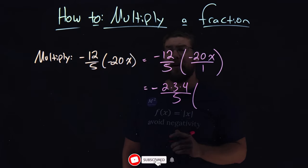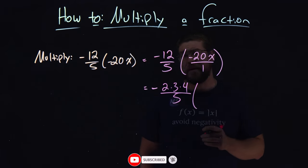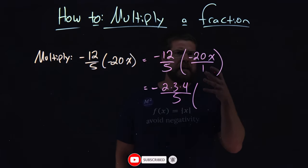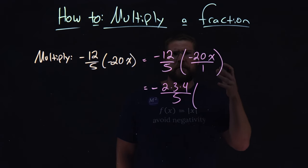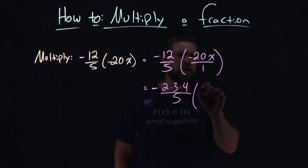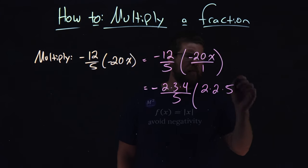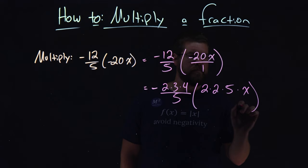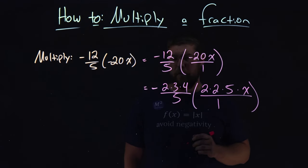What about the prime factorization of negative 20? Well, negative 20 is 4 times 5, which is 2 times 2 times 5, and then we have times the x, all over that 1.